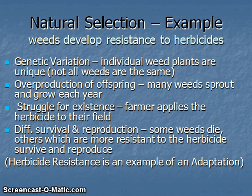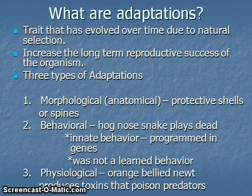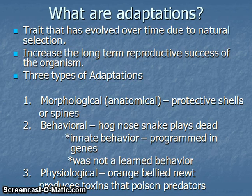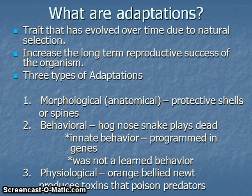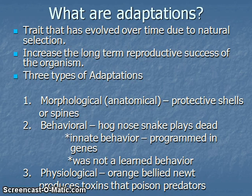This leads to the question: what are adaptations? These are traits that have evolved over time due to natural selection, and they increase the long-term reproductive success of an organism. We classify adaptations into one of three categories. The first is a morphological or anatomical adaptation — a body structure adaptation — for example, protective shells or spines, or on plants, thorns, which prevent animals from eating that plant or serve other purposes.